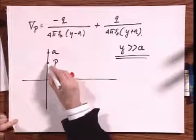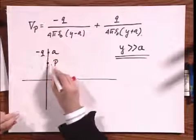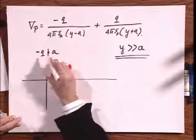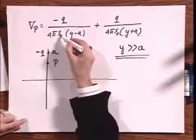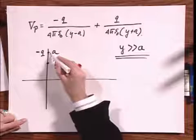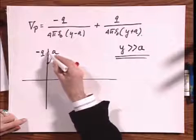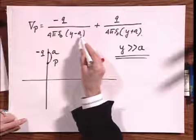Because when I now calculate the potential at point P due to this charge minus q, the minus q remains here, the 4 pi epsilon zero remains here. But now the distance between that point P and this position is no longer y minus a,